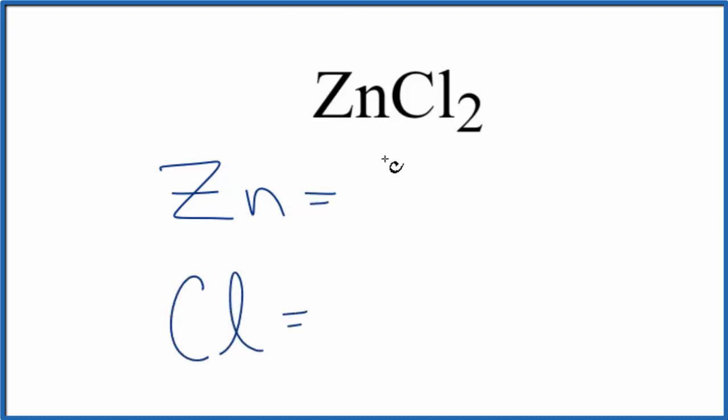So for zinc, there's nothing written, so we assume the subscript is going to be one. So we have one zinc atom, and then two chlorine atoms. So the total number of atoms for ZnCl2, that would be three.